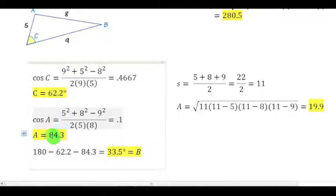Now, to find the third angle, of course we add them all together, subtract from 180 to find that my last angle is 33.5 degrees.